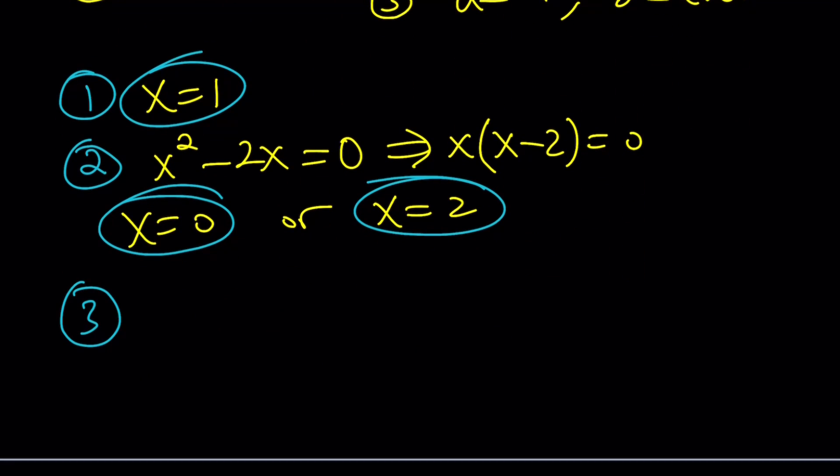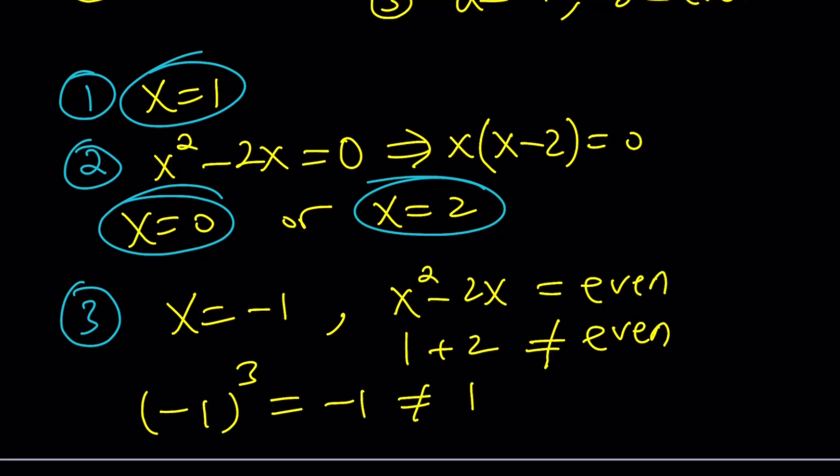Now, the third case is where a equals negative 1, which means x equals negative 1. But, that doesn't come by itself. It's a package. Along with this, we do need exponent to be even. But, when x is negative 1, you get 1 plus 2, which is not even. It's 3. So, in other words, if you plug in negative 1, you're going to get negative 1 to the power 3, which is equal to negative 1, and that's not equal to 1. So, negative 1 is not a solution. We have to discard it.